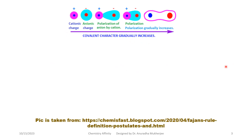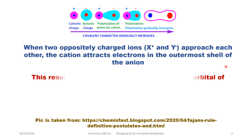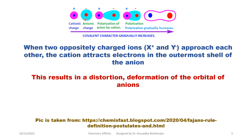In this picture, we can understand what polarization means. Here we have a cation and anion with no orbital overlap, so this represents a 100% ionic character compound. But in the second picture, we can see the anion orbital is slightly overlapping with the cation orbital, meaning this ionic compound has some extent of covalent character. As we move to the right-hand side, the orbital overlap increases, meaning the ionic compound is getting more covalent character. The final figure shows a complete covalent compound.